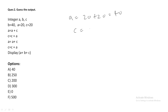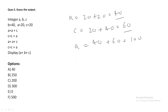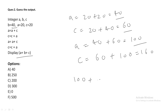Next, c = c + a: c is 20 but a has been updated to 40, so c becomes 60. Then a = a + c: 40 + 60 = 100. Then c = c + a: 60 + 100 = 160. Display a + b + c: a is 100, b (v) is still 40, c is 160. The sum is 300, so the output is 300.